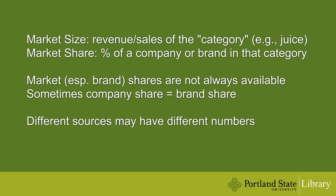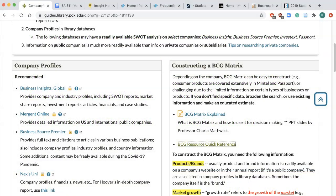Different resources may have different numbers on the same market due to different definitions, research scope, time period, and research methodology. Therefore, when doing a BCG matrix analysis, it's best to use data from the same source. But sometimes you may need to get data from a few different sources because coverage of markets also varies from one source to another. Let's move on to see how to find the data from our key library databases.